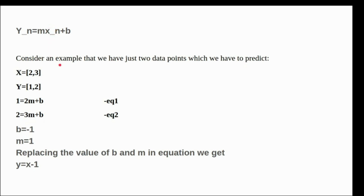Let's consider a simple example with only two data points in our training set. The two inputs are x equals 2 and 3, and the corresponding outputs are y equals 1 and 2. This means if we input 2 to our linear regression algorithm we should expect an output of 1, and if we input 3 we should expect an output of 2. We need to find the values of m and b that give correct predictions.